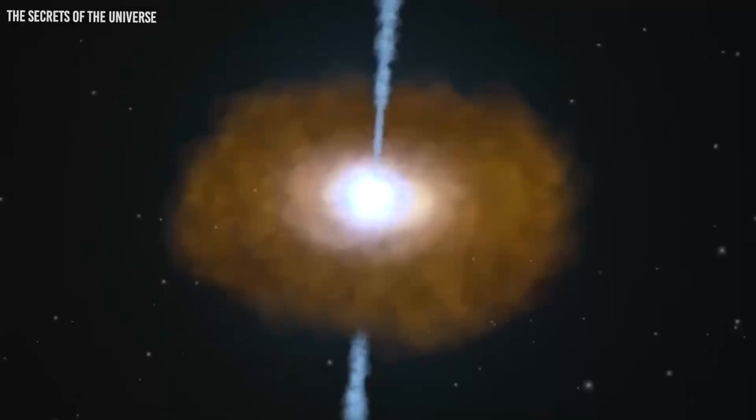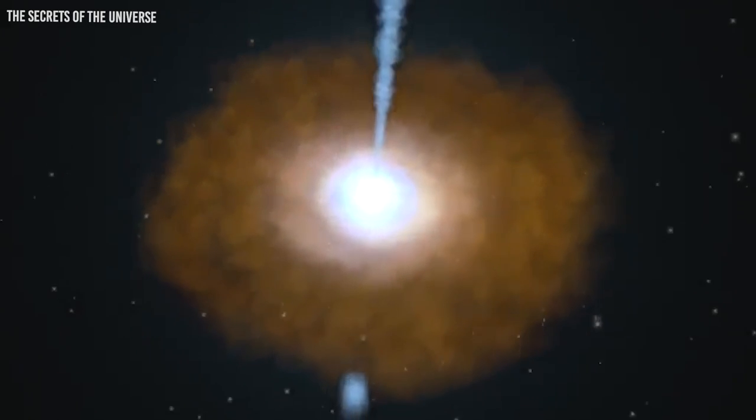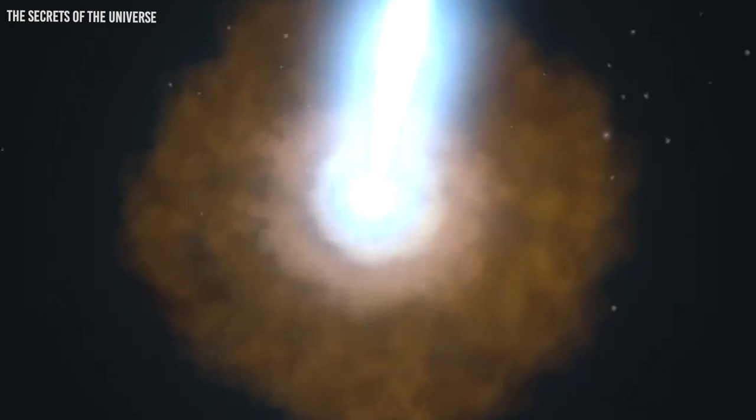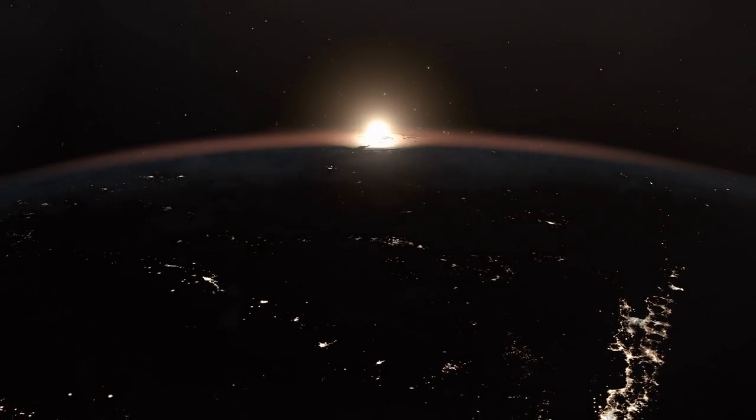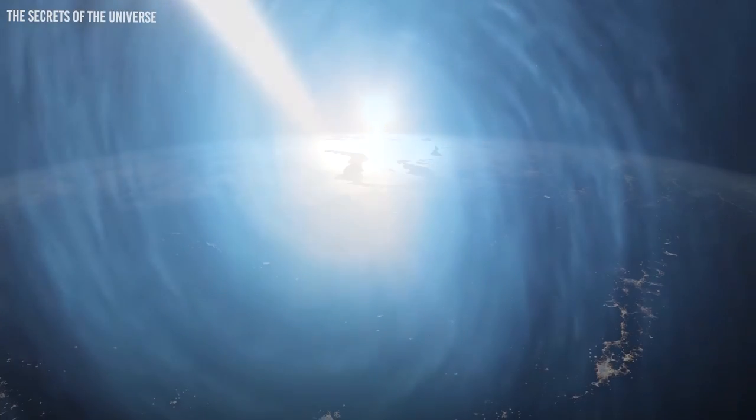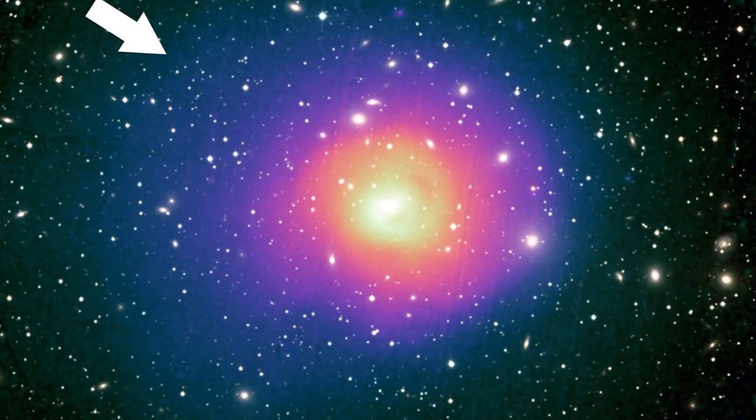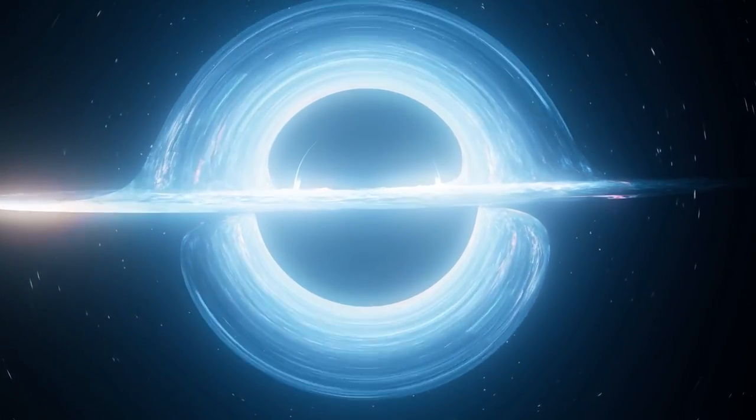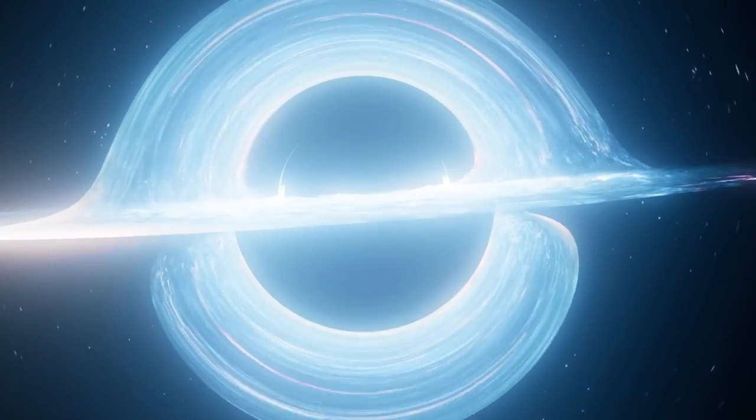Another recent discovery revealed that the object previously mistaken for a radio galaxy is actually a black hole pointed directly at Earth, and it is nothing short of remarkable. This supermassive black hole, located in a distant galaxy, has shifted its angle by a gigantic 90 degrees, which is a puzzling phenomenon that has left physicists bewildered.